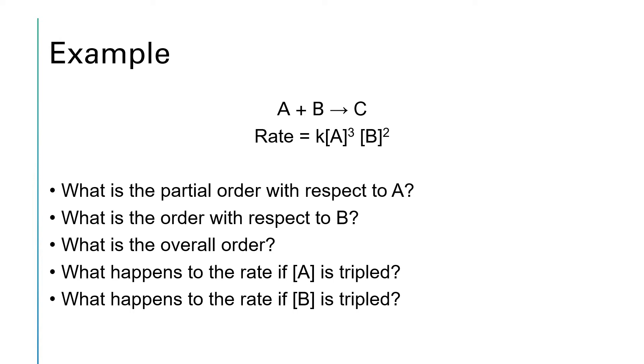The first question wants to know what is the partial order with respect to A? This is limiting us to reactant A, so it's going to be whatever the exponent on A is. And there's more than one reactant and we're asking about just one, that's known as the partial order. So the partial order with respect to A is the exponent on A, which is three.